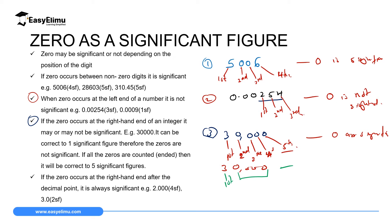Case 4 is when zero occurs on the right-hand end after a decimal point — in this case, zero is significant. For example, 2.000: you could simply write this number as 2, but if you decide to insert a decimal point and continue with zeros, it means all those zeros you have added are significant. So this number has four significant figures: 2 is the first, and each zero is the second, third, and fourth significant figure.